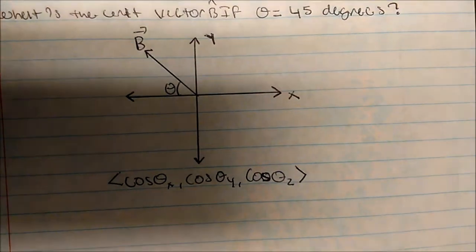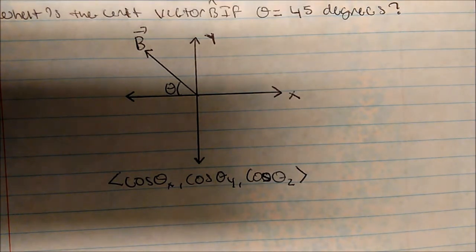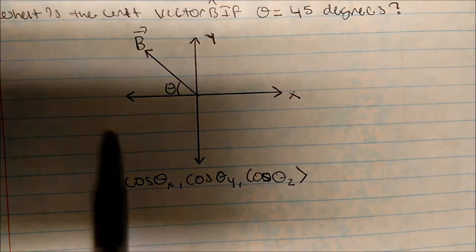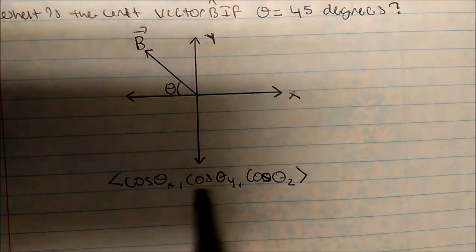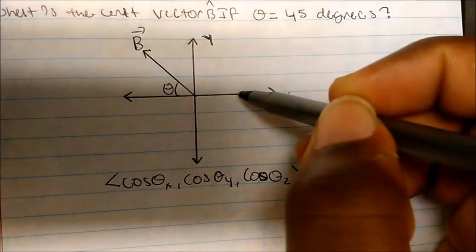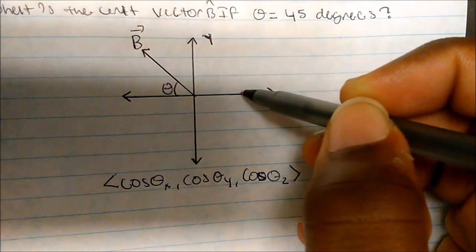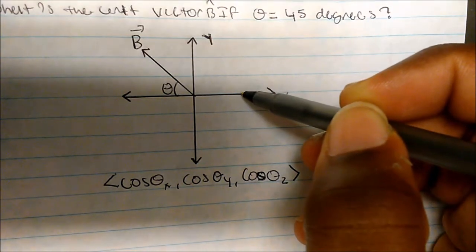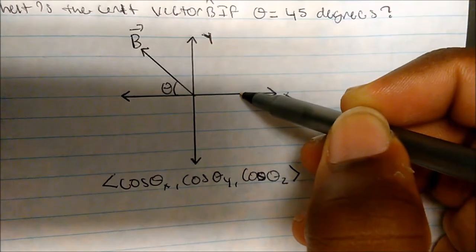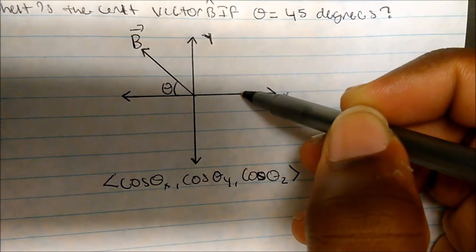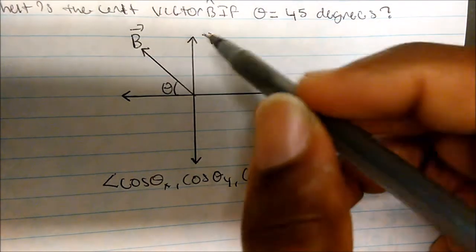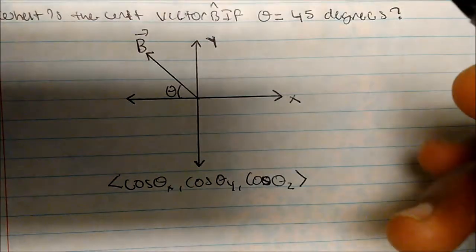We know this to be true. The difficulty is just finding out what theta is. If I'm looking at the x-direction, the unit vector is always given from whatever coordinate you're starting with — x, y, or z — and you go straight to the vector itself.